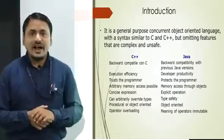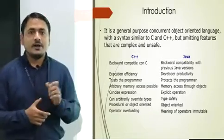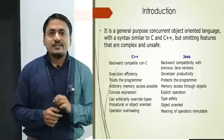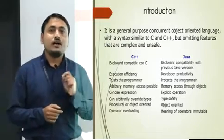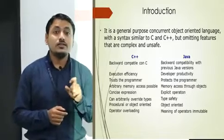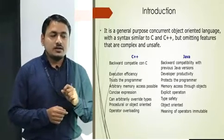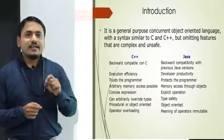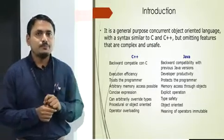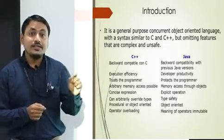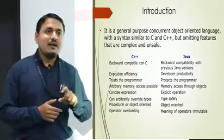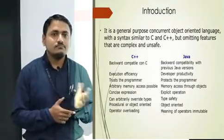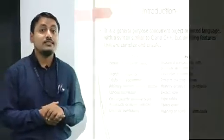Another important factor: in C++ we have a concept of pointer, but in Java there is no concept of pointer. The main concern is that whenever we implement the concept of pointer, we focus on the address. That means a hacker can easily hack a specific program or device according to its address. But in Java there is no concept of pointer, which is why it is a more secured language than C++ or C.